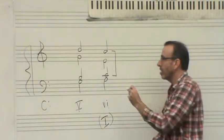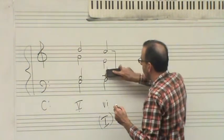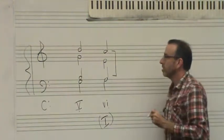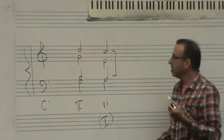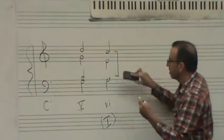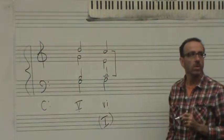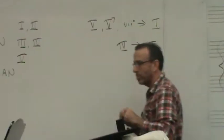Now it is also possible, as long as the leading tone is in an inner voice, to double the root. So that would be another possibility. But normally you would just resolve it upward and get two thirds in a deceptive progression.